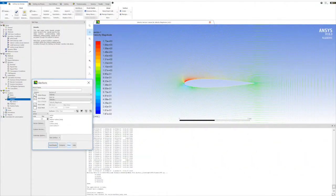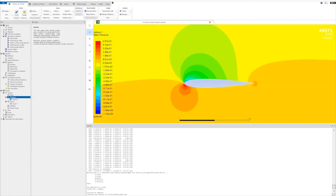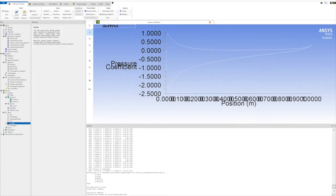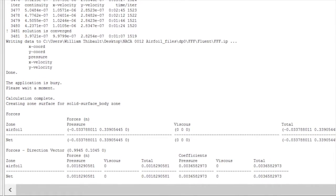From the ANSYS Fluent package, we are able to get velocity vectors, pressure contours, streamlines, the pressure coefficient, but most importantly, the lift and drag coefficients.